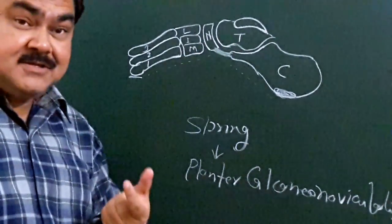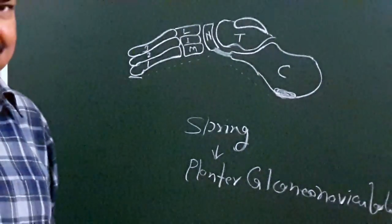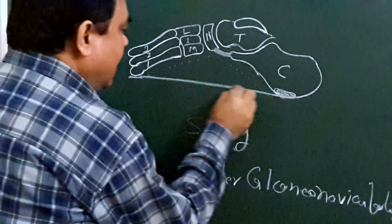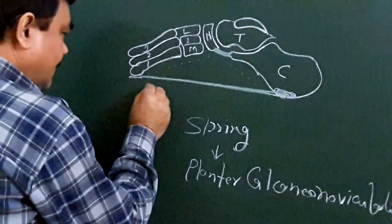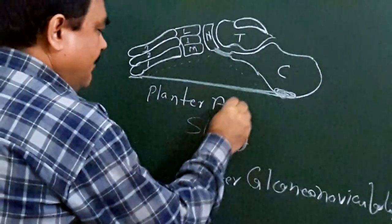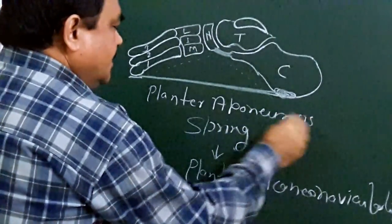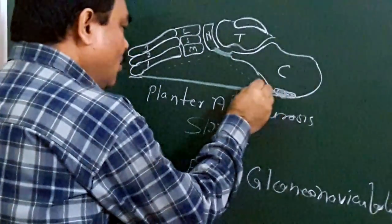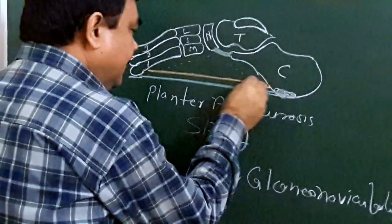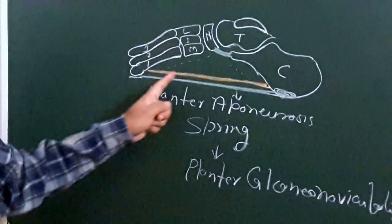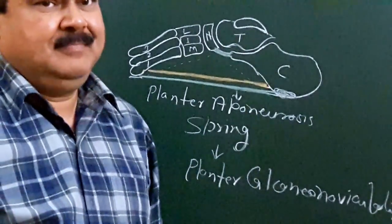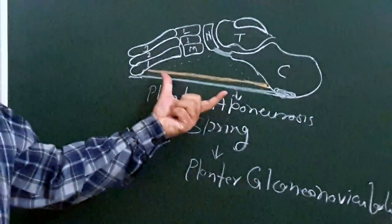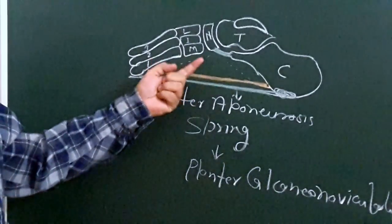There are other structures which form the tie beam. Here is the plantar aponeurosis. Another structure is the muscles of the first layer of the sole, especially flexor digitorum brevis. This tie beam holds the two ends of the arch.